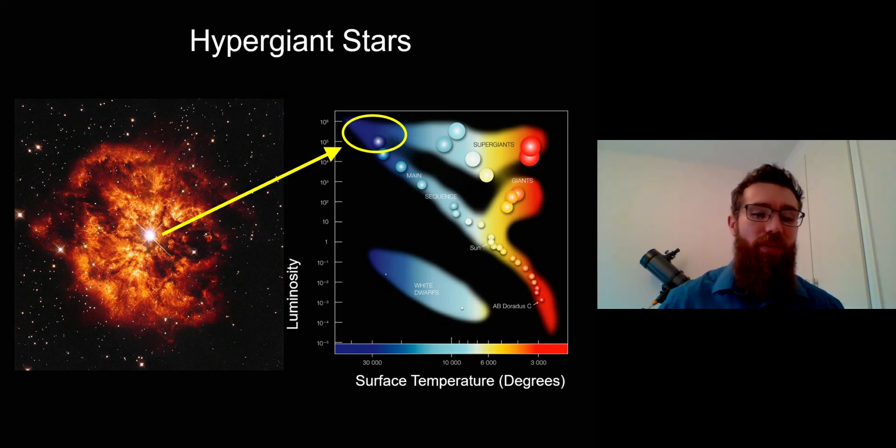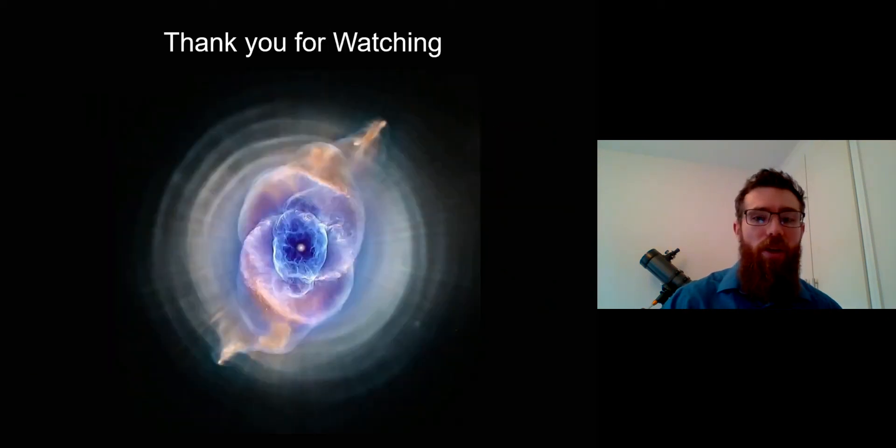They have these very fast expanding envelopes around them, which we can see here, and then a very bright central star as well. That's why they sit on the upper left of these diagrams. Thank you for watching. Hopefully that was interesting.